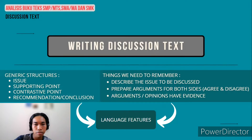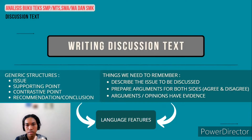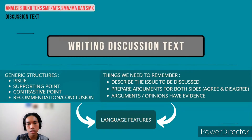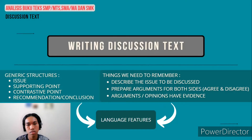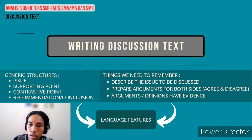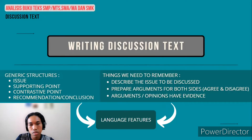After stating the issue, you have to make a supporting point. It is necessary to present the argument that supports — the side that is agreeing. In short, this is arguments for, plus supporting evidence. Besides the supporting argument, discussion text also needs arguments which disagree with the issue — the arguments against, plus supporting evidence. This is the contrastive point.